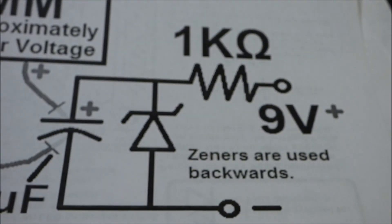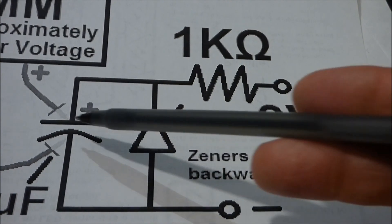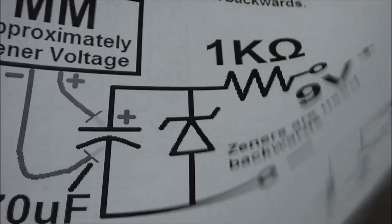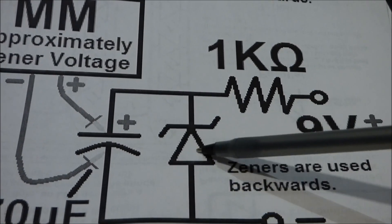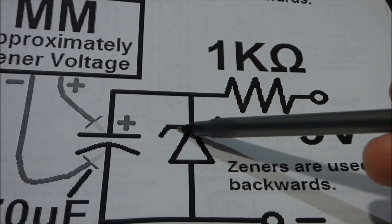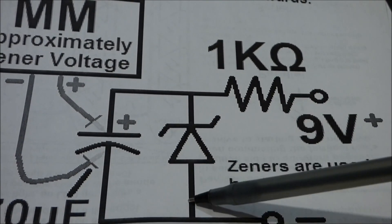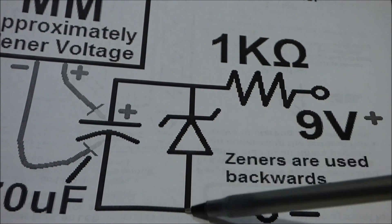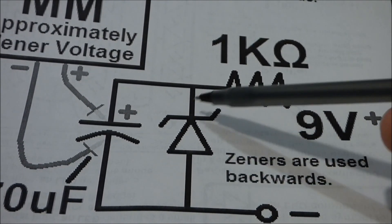Here is a schematic. There is the 470 microfarad capacitor with the Zener diode. Now remember it's backwards from other diodes. We're going to make it conduct this way, which is actually backwards. It'll conduct the other way easier, but we don't want that.